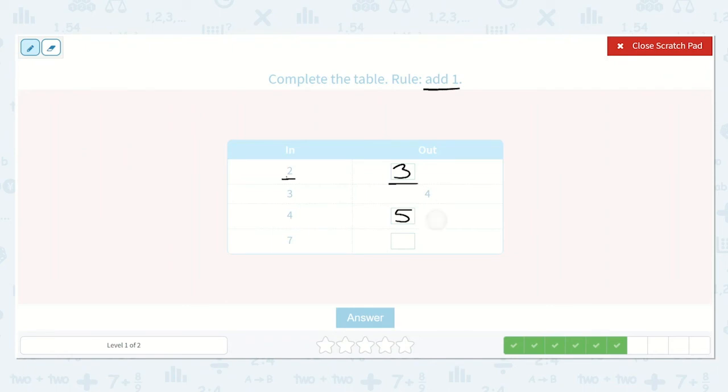So notice these won't always be in order. See how this is three, four, five. This one is not six because this number is larger. So we need to add one to seven. Seven plus one is eight. Great job. Don't let those funny patterns trick you.